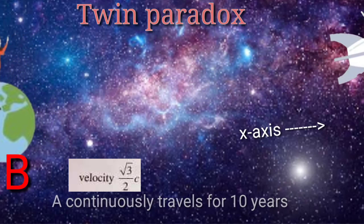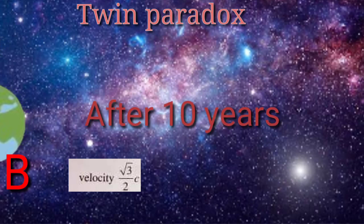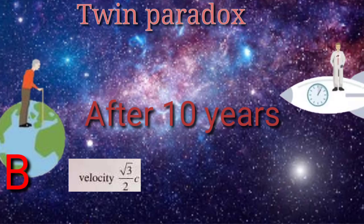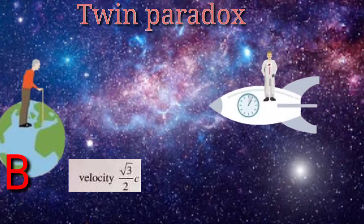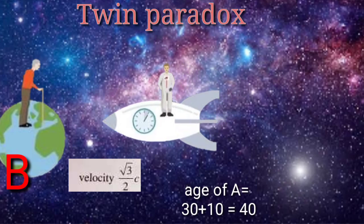And B remains on earth, waiting for his brother. So when A returns, his age is 30 plus 10, that is equal to 40 years.